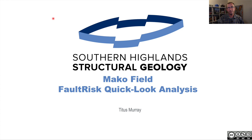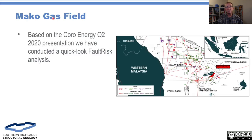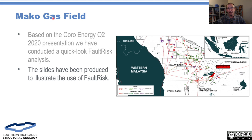We're going to be having a look at how we can use fault risk to better understand fluid contacts within this field in the shallow waters between Indonesia and Malaysia. The data comes from Coro Energy's Q2 2020 Investor Pack and it gives us an idea about where the field is between Malaysia and Indonesia. We're using this just as a quick-look analysis for fault risk. We haven't been paid to do any of this.